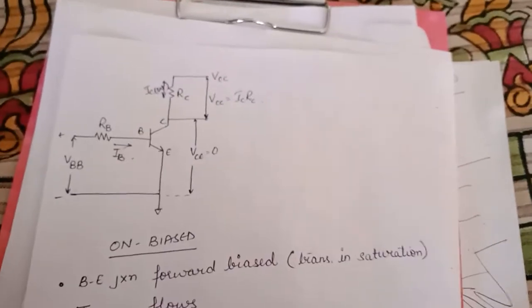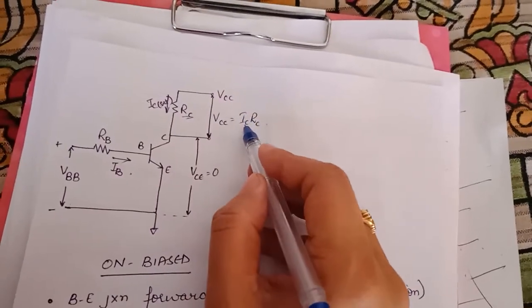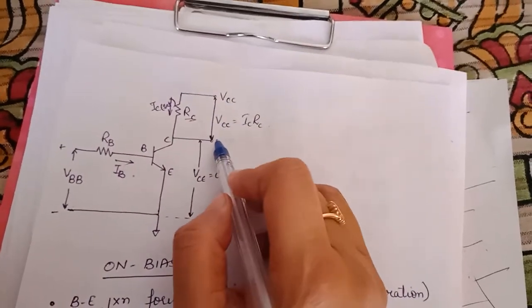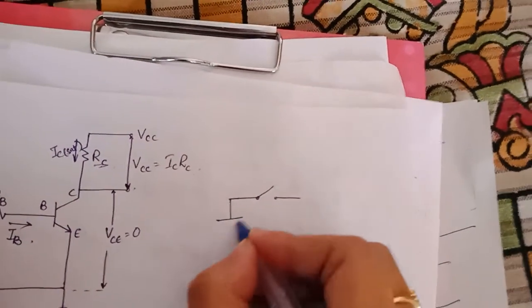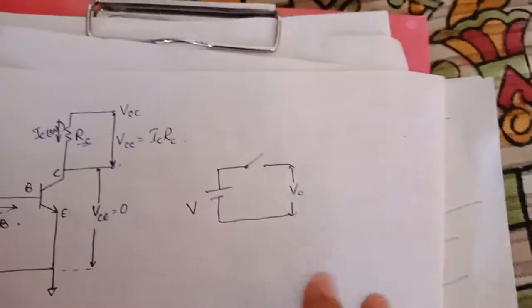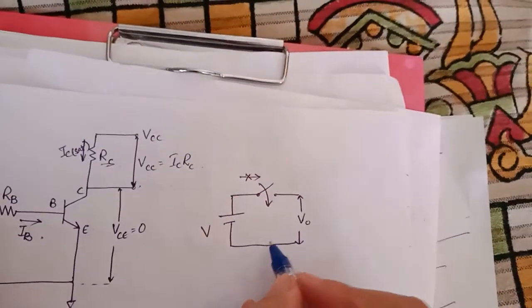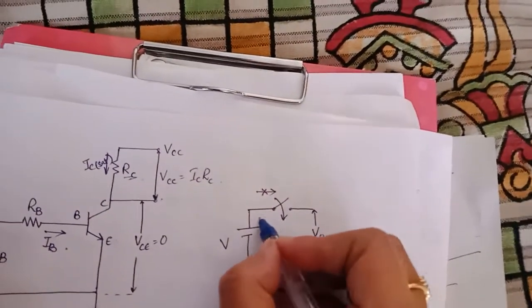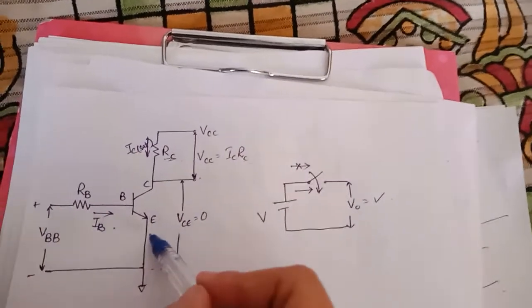The collector-emitter junction acts as a closed contact. The maximum voltage drop appears across RC, so VCE will be approximately zero. The voltage across RC equals IC(sat) × RC, and we get current flowing through the circuit. To illustrate with a simple circuit: consider a switch with a voltage applied and an output V-out. This switch is open when no current flows, and closed when current flows and we get an output. This is the same principle applied to a transistor.